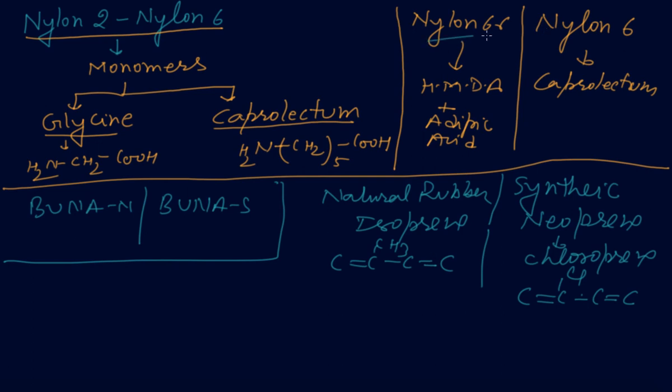When we make the command in this way, it is easy to learn and grasp the things. Nylon 6-6 is made up of hexamethylene diamine and adipic acid, Nylon 6 is made up of caprolactam, and Nylon 2-Nylon 6 monomers are glycine and caprolactam. In three nylons, Buna-N, Buna-S, and natural rubber and synthetic rubber - definitely one will come in the exams. And then with this, we learn the first chapter, that is elastomers and fibers.